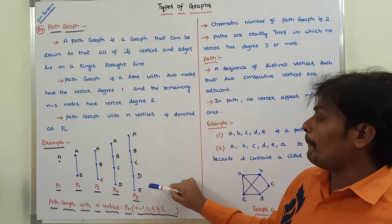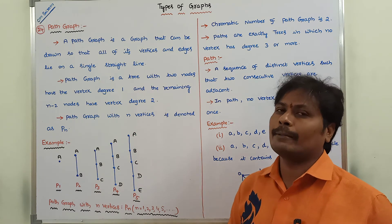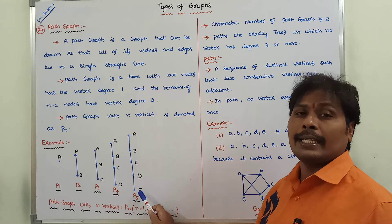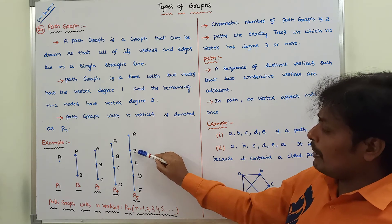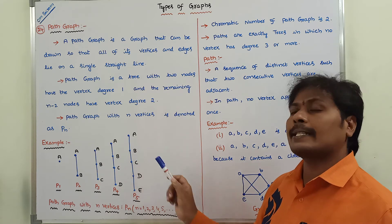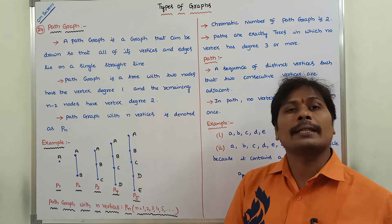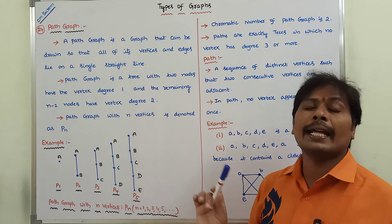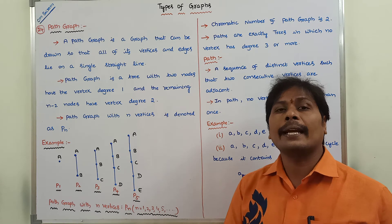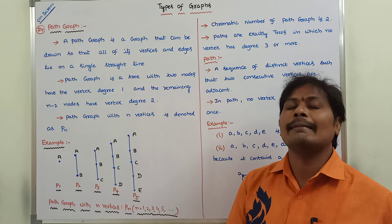Observe this P5 graph. The starting vertex and ending vertex have degree 1 — vertex A has degree 1 and vertex E has degree 1. The remaining vertices B, C, and D have degree 2. In a path graph with N vertices, the starting vertex and ending vertex have degree 1, and the remaining N minus 2 vertices have degree 2. No vertex in a path graph has degree 3 or more.